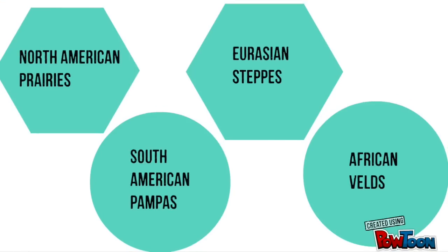Within these areas there are specific names for the temperate grasslands. In North America they're called prairies, in South America they're called pampas, in Eurasia they're called steppes, and in Africa velds.